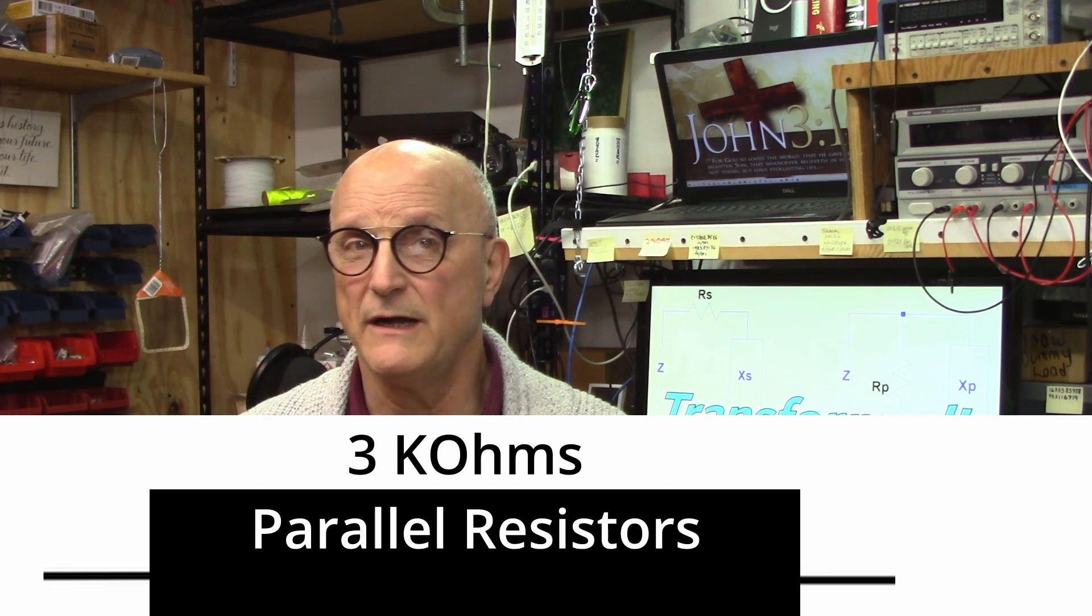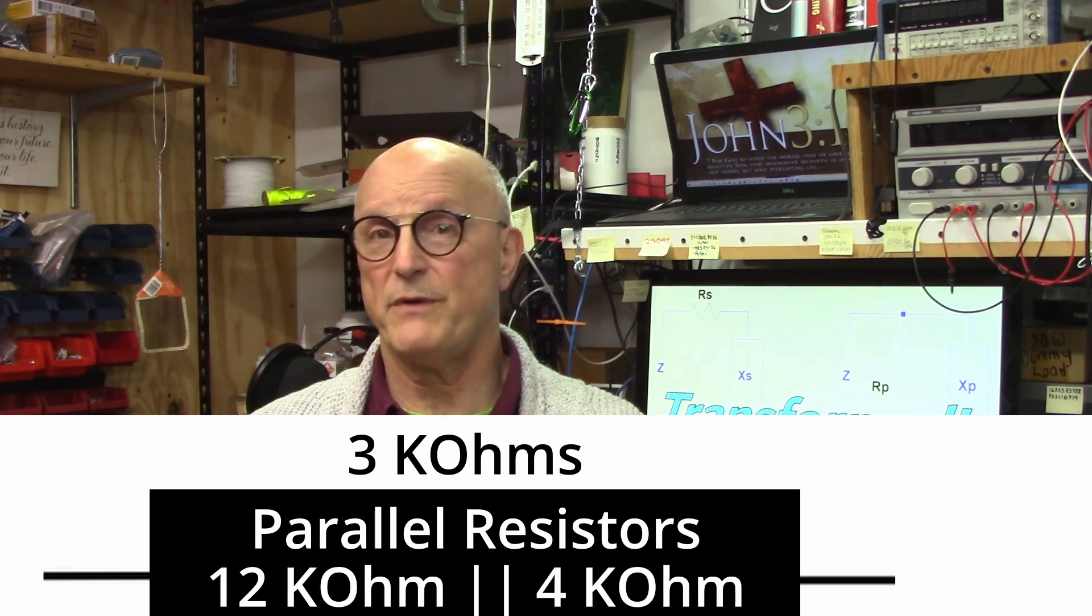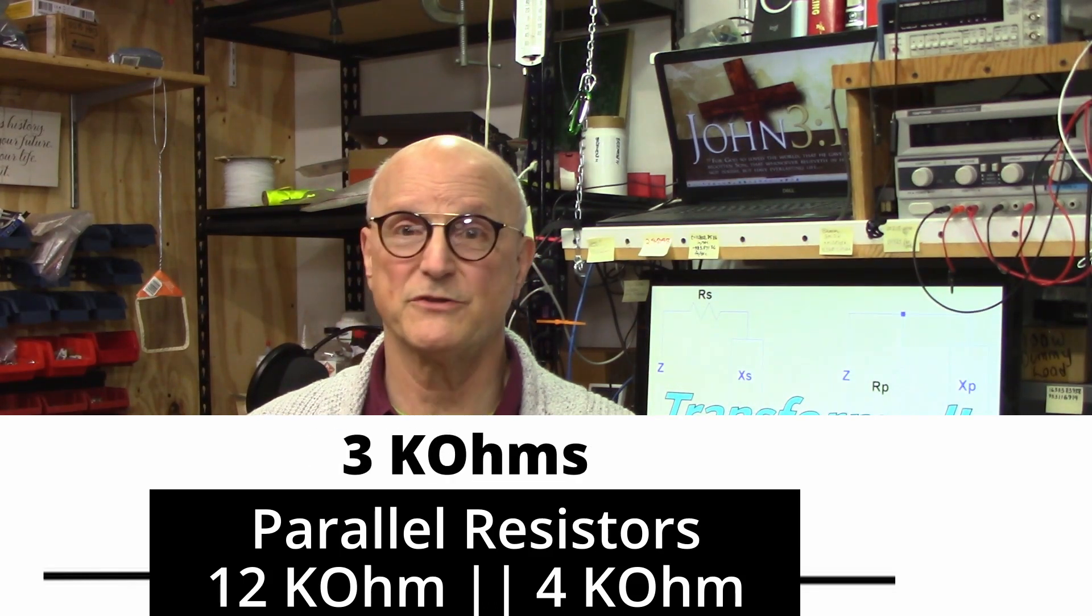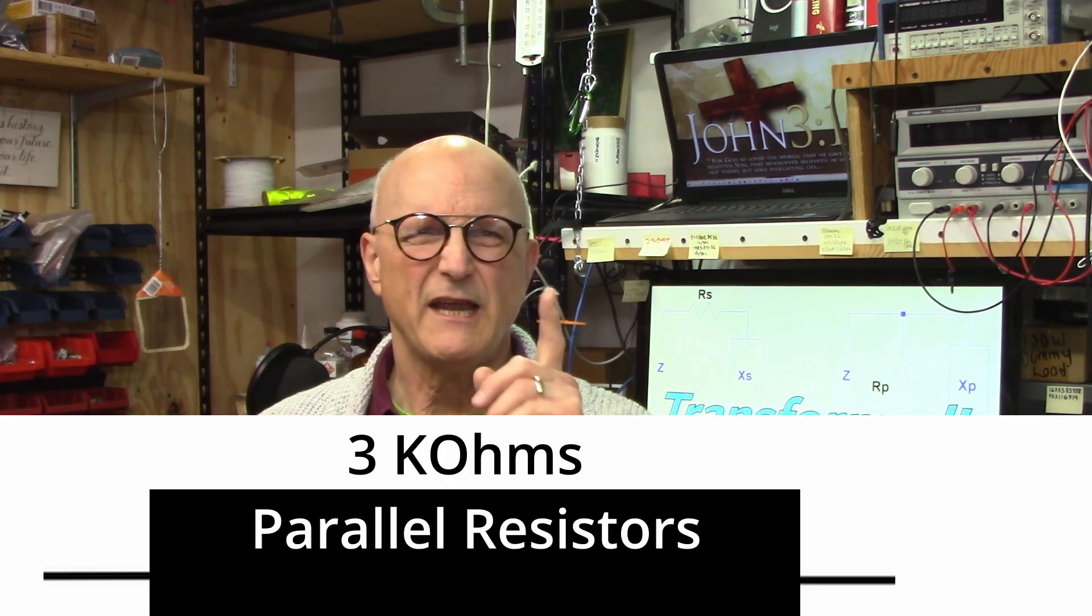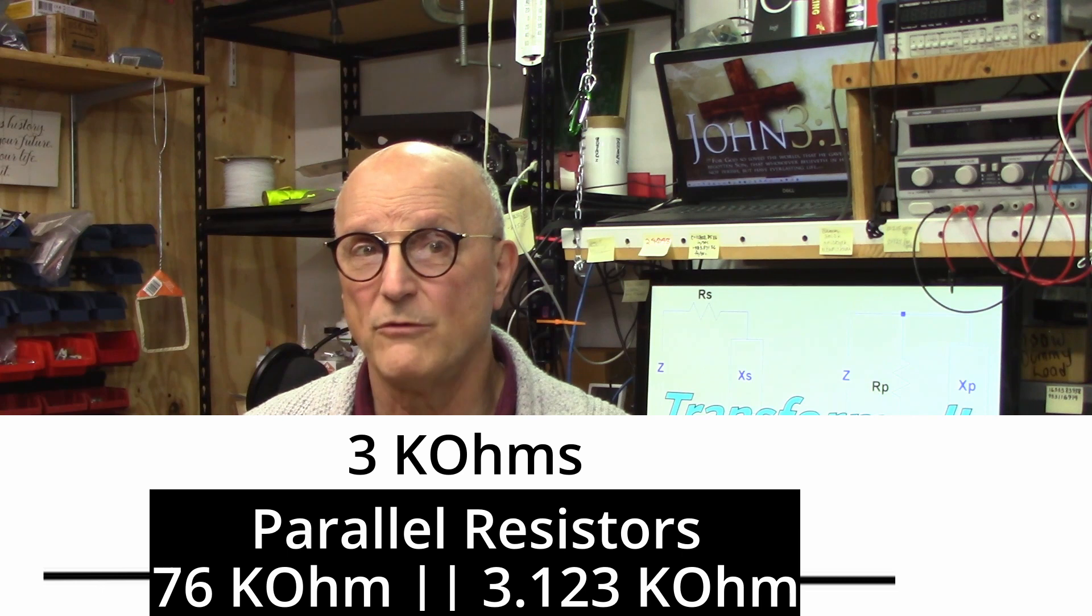That same resistance could also be the result of 2 resistors in parallel. One such combination is a 12k ohm resistor in parallel with a 4k ohm resistor. And this would produce the same 3k ohm result. But this same result of an equivalent 3k ohms could also be had with a 76k ohm resistor in parallel with a 3.123k ohm resistor or a myriad of values all resulting in the same equivalent 3k ohms.